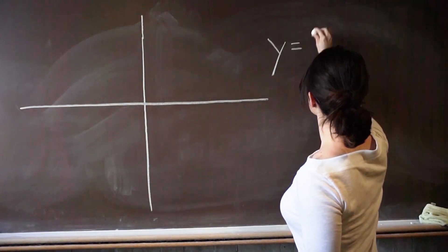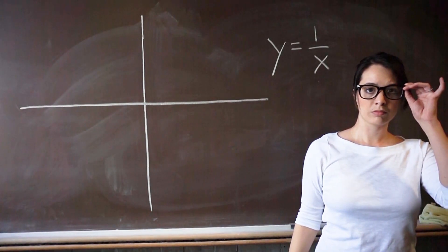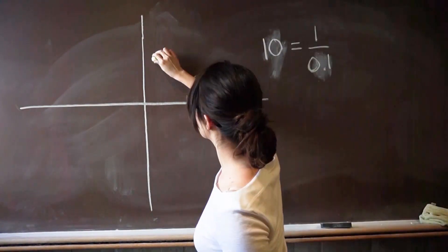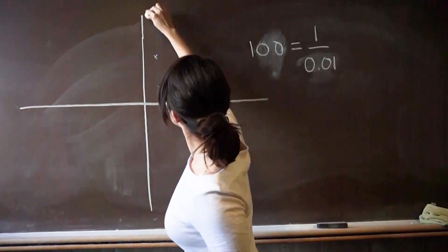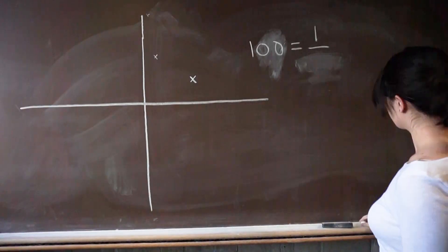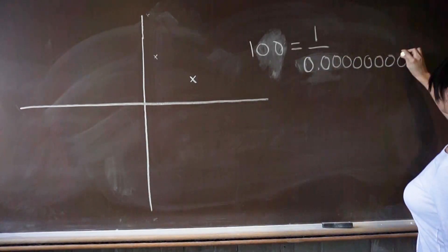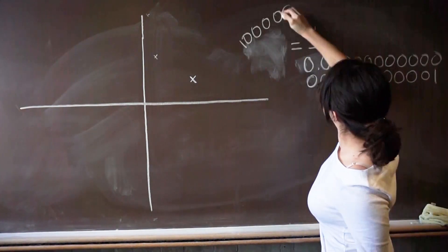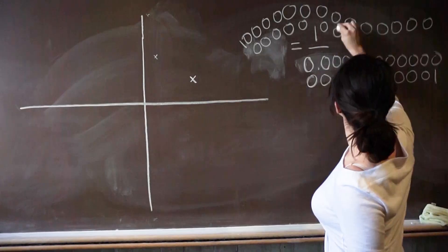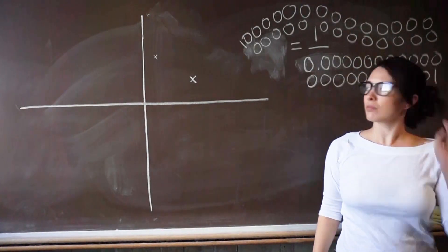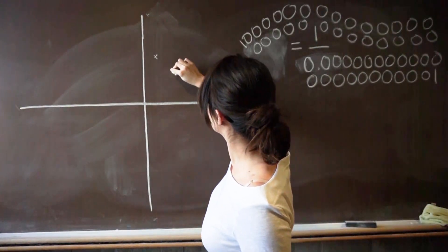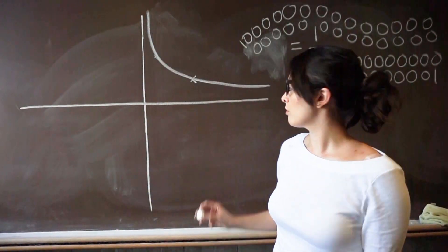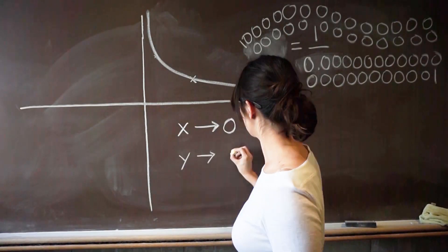Let's take the function one over x and plot a few points. When x is 1, y is 1. When x is 0.1, y is 10. When x is 0.01, y is 100. And when x is 0.0000000000001, y is a really big number. So as x gets really, really small, y gets really, really big. In math terms: as x approaches zero, y approaches infinity.